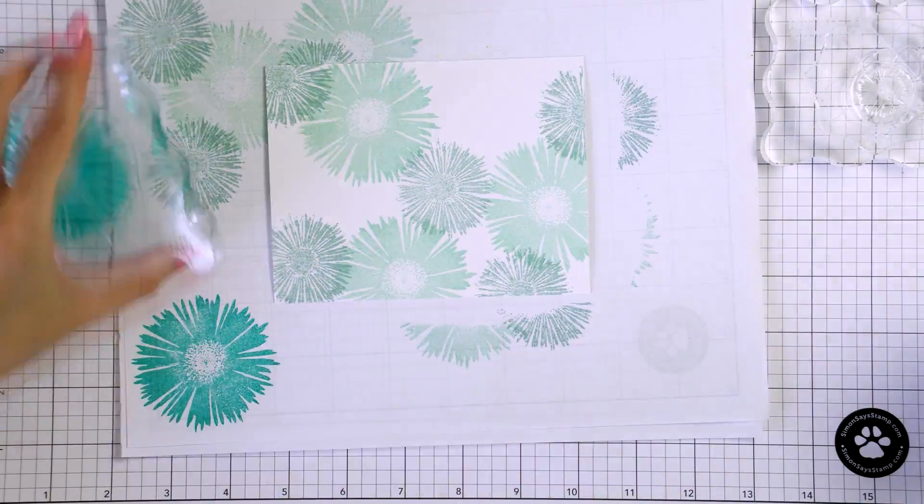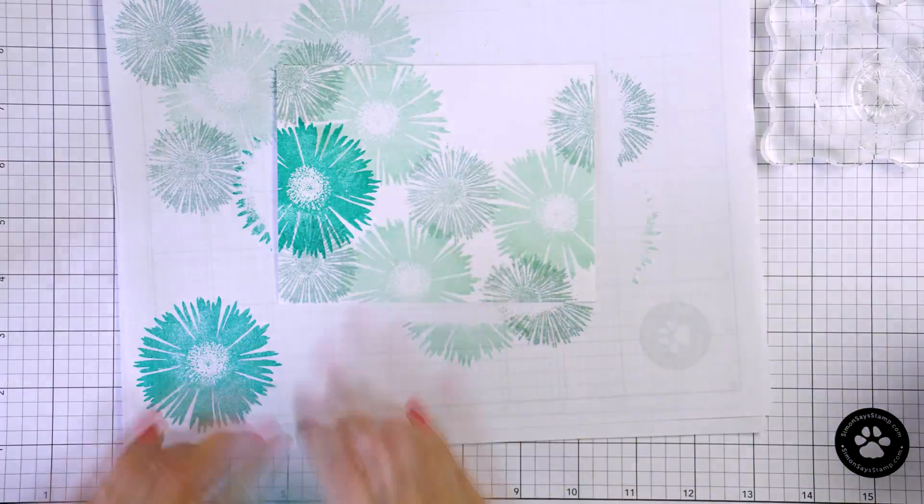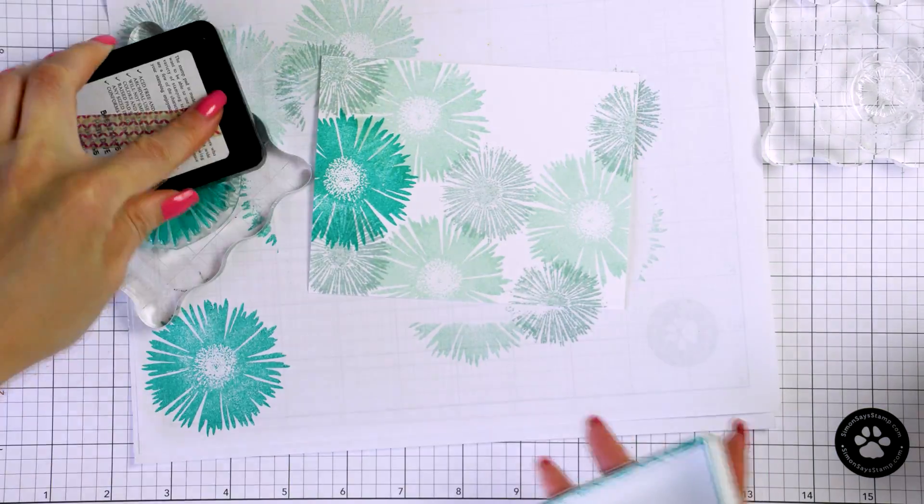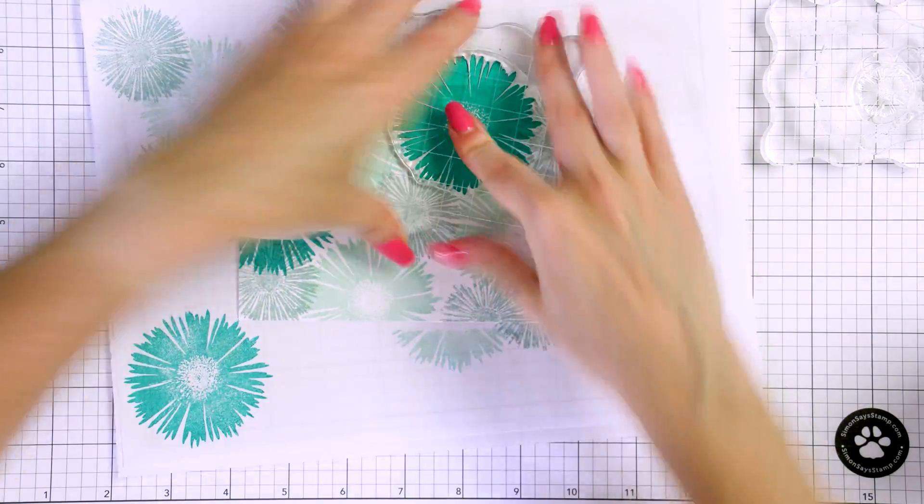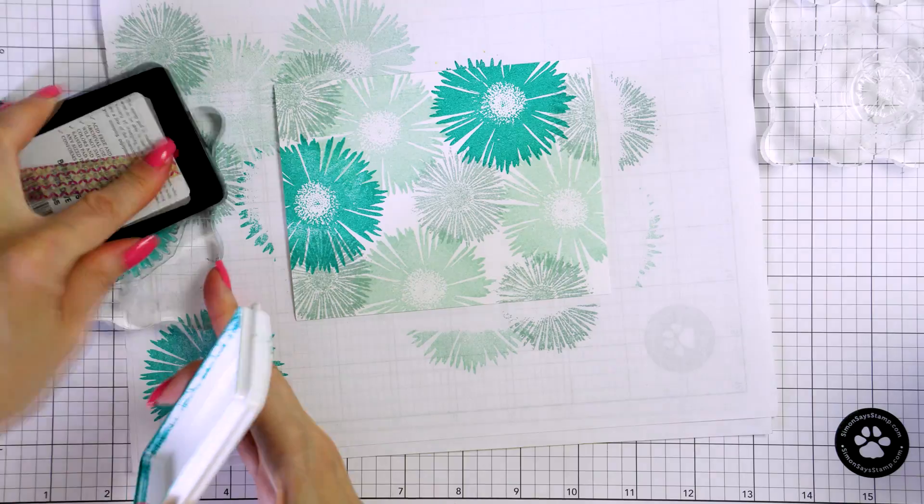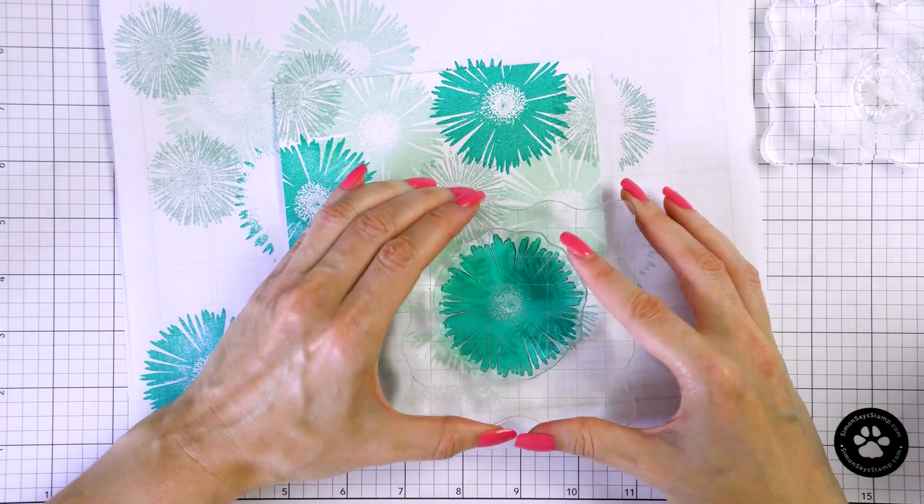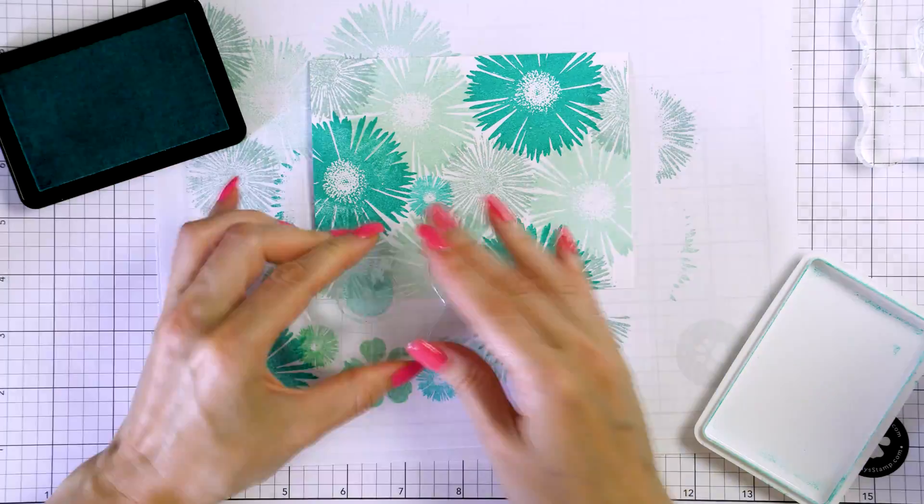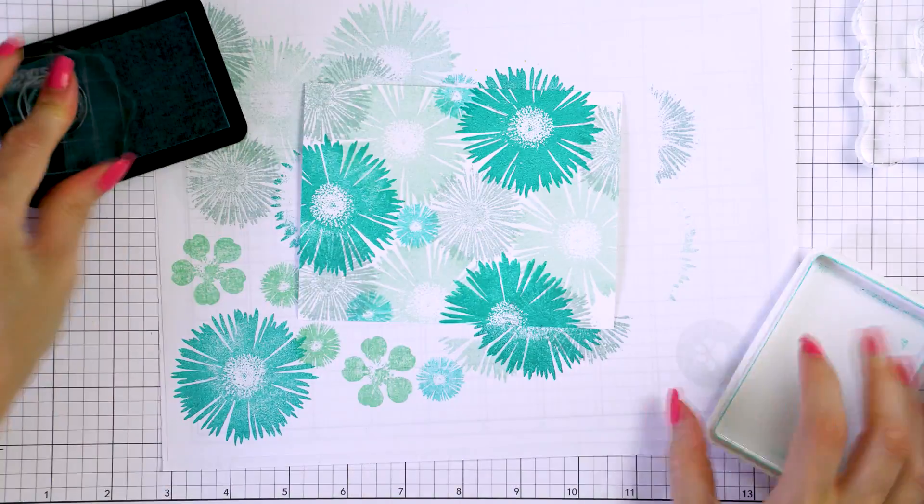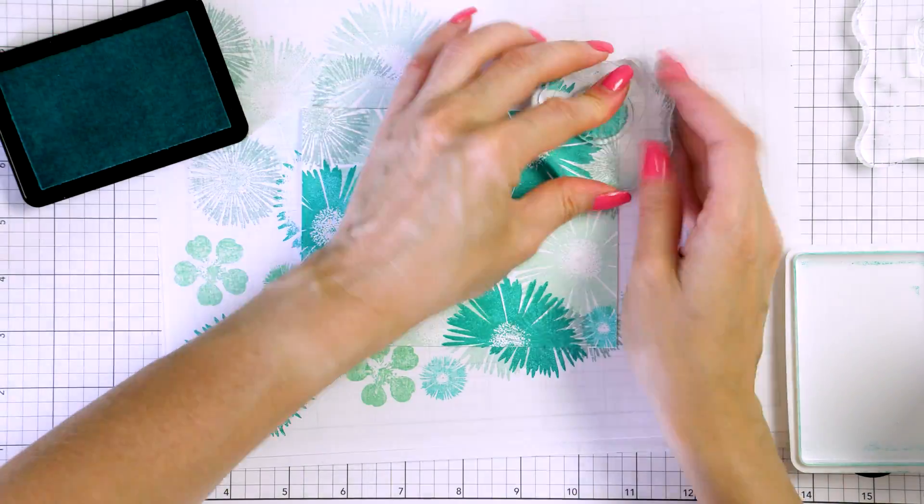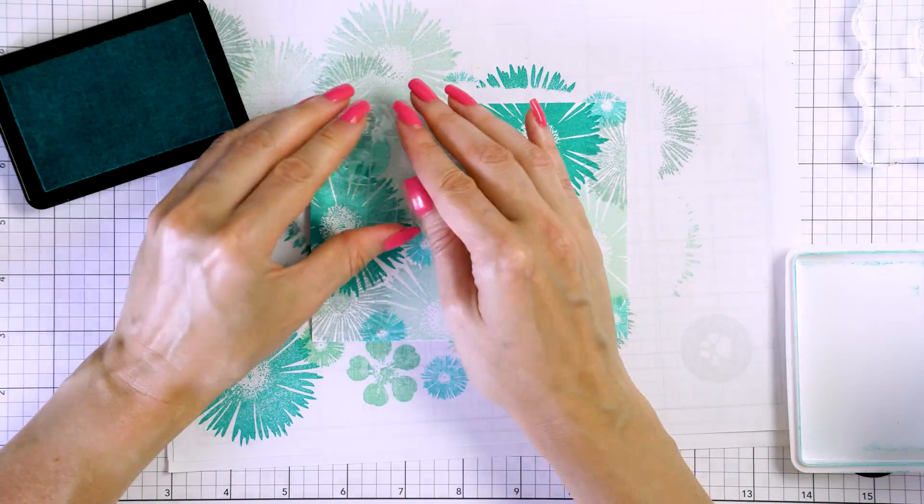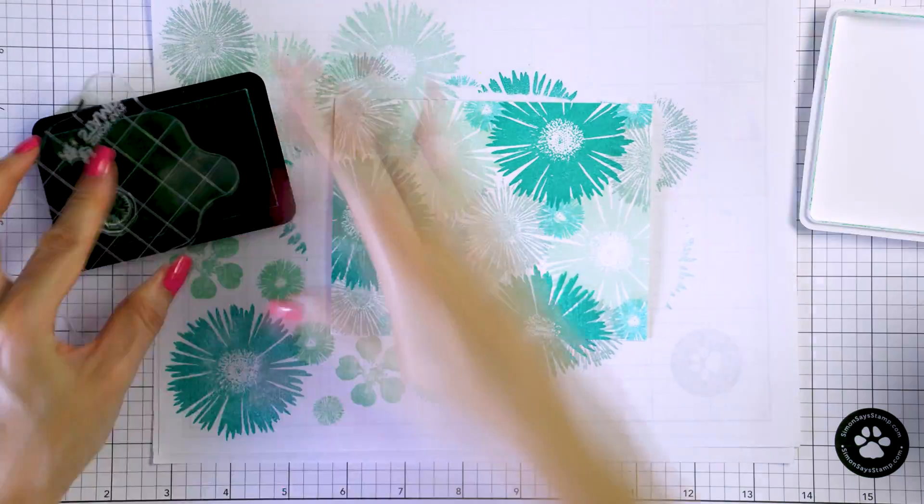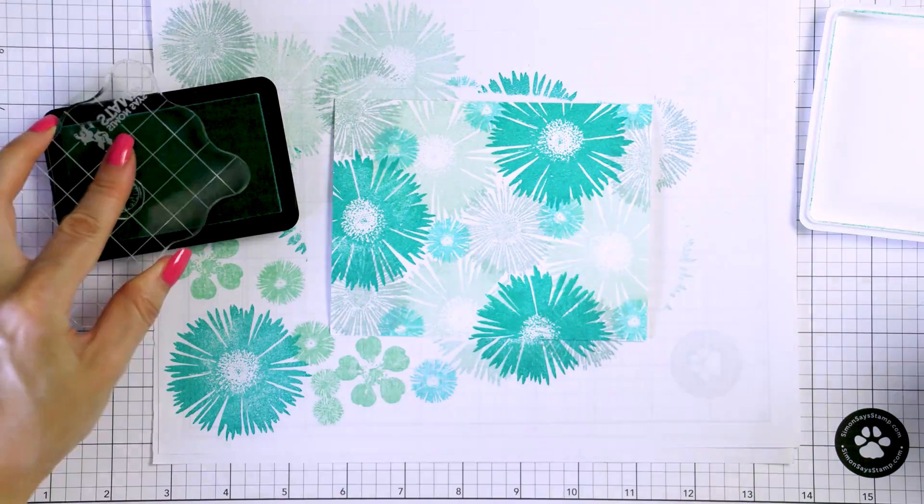I'm going back to the largest flower and stamping it on the background using a slightly different shade of ink making those flowers pop. And again notice the placement of the images. Now I can come in with my smaller flowers and fill any open spaces. I'm using a different color of ink for each of the flowers. This just adds diversity to my background and here's a look at the finished piece.